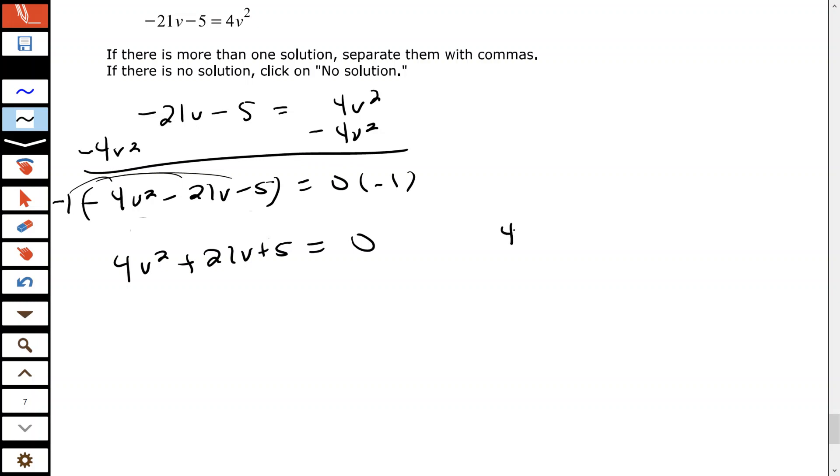Use the AC method to factor this, so 4 × 5 = 20. I want to find factors of 20 that give me a sum of the middle number of 21, which would be 1 and 20.